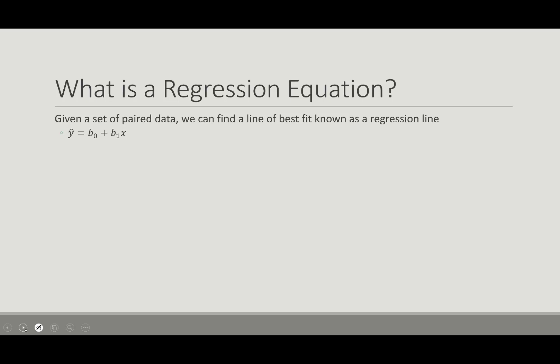So we're going to look at first what is a regression equation. Well, when we are given paired data, we can oftentimes find a line of best fit which is known as a regression line, and this is what we would consider our regression equation. Now if we look at this, the equation for it we have y hat is equal to b sub 0 plus b sub 1 times x.